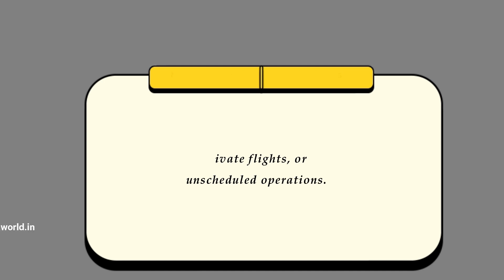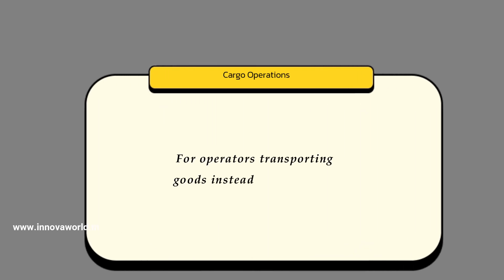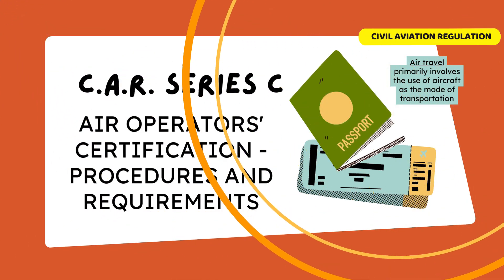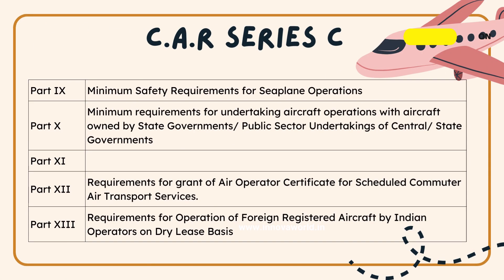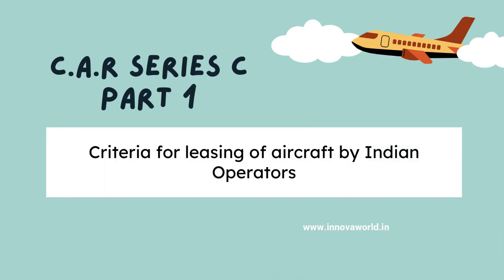Cargo Operations are for operators transporting goods instead of passengers. CAR Series C follows 13 parts. Part 1 represents the criteria for leasing of aircraft by Indian operators.